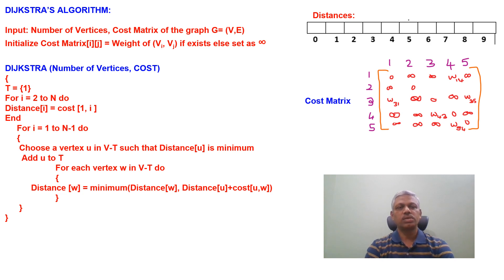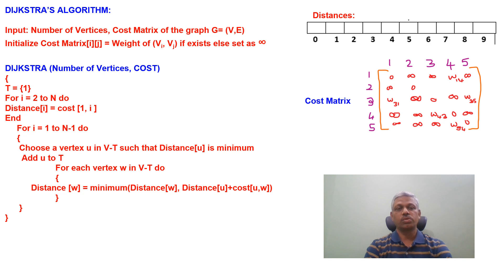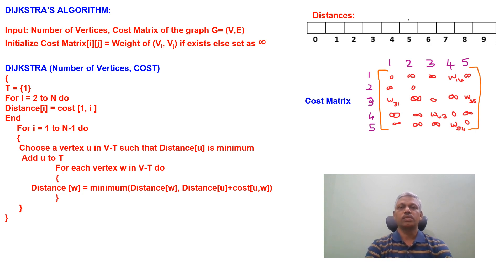Looking at the algorithm: T is initialized as {1}, and for i running from 2 to n, distance[i] is set to cost[1][i] — updating distances from vertex 1 to all other vertices as initial costs. Then for i running from 1 to n−1, we choose vertex u in (V minus T) such that distance[u] is minimum, add u to T, and for each vertex w in (V minus T), update the weights. We keep doing this in a for loop until the end result consists of all updated shortest distances.